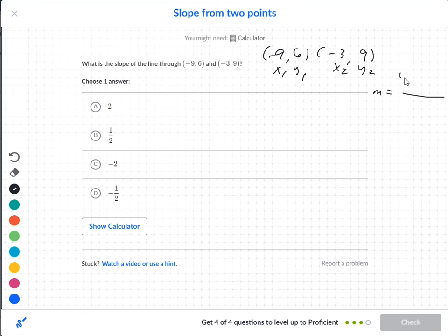The formula is second y, subtract first y, second x, subtract first x. Second y is 9, minus 6, and then you have negative 3, minus negative 9. So, on the top here, you're going to take the 9 minus 6 first.